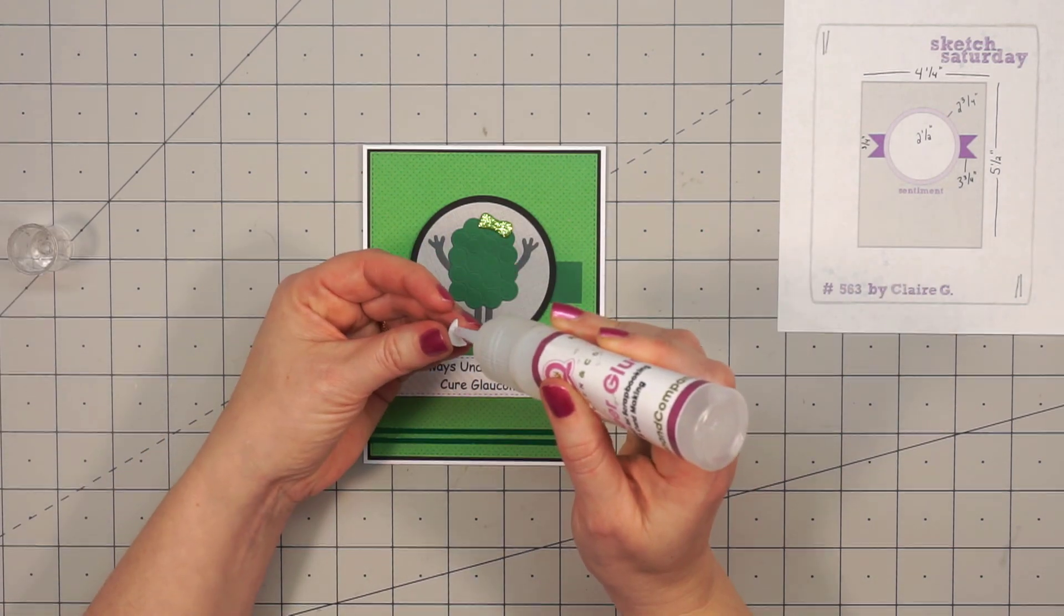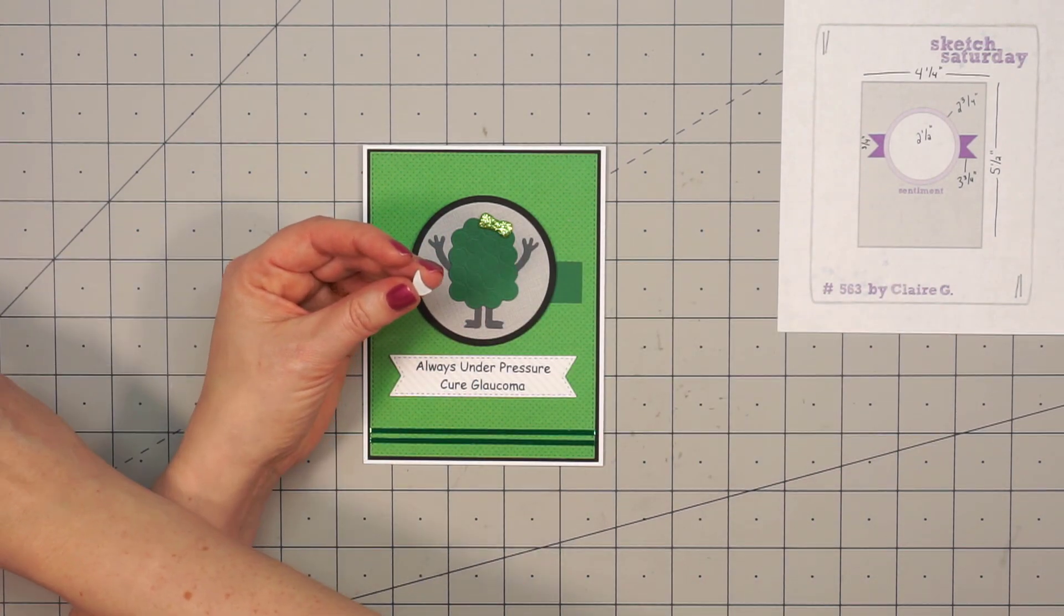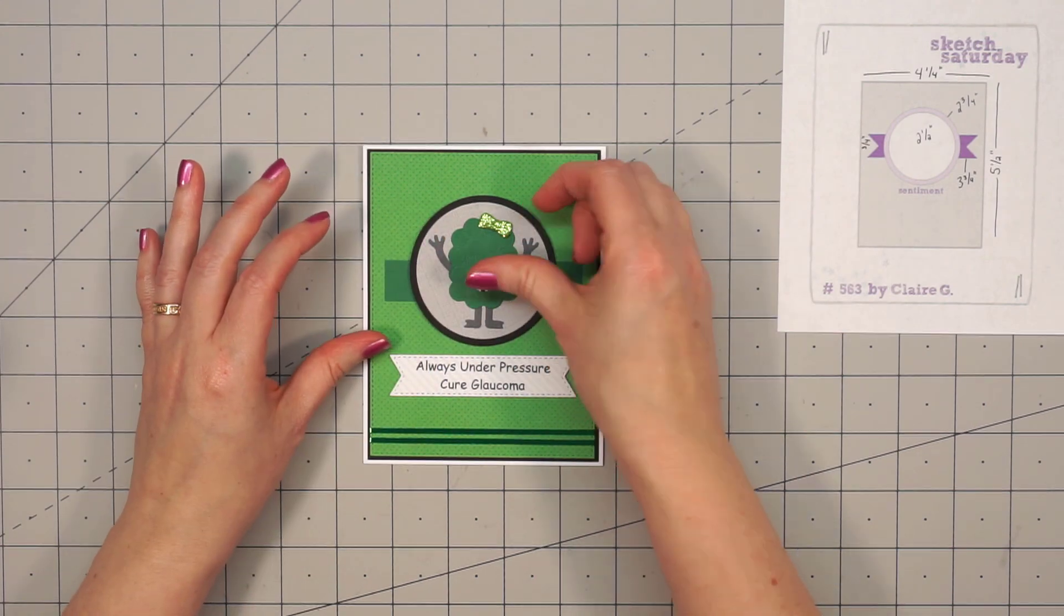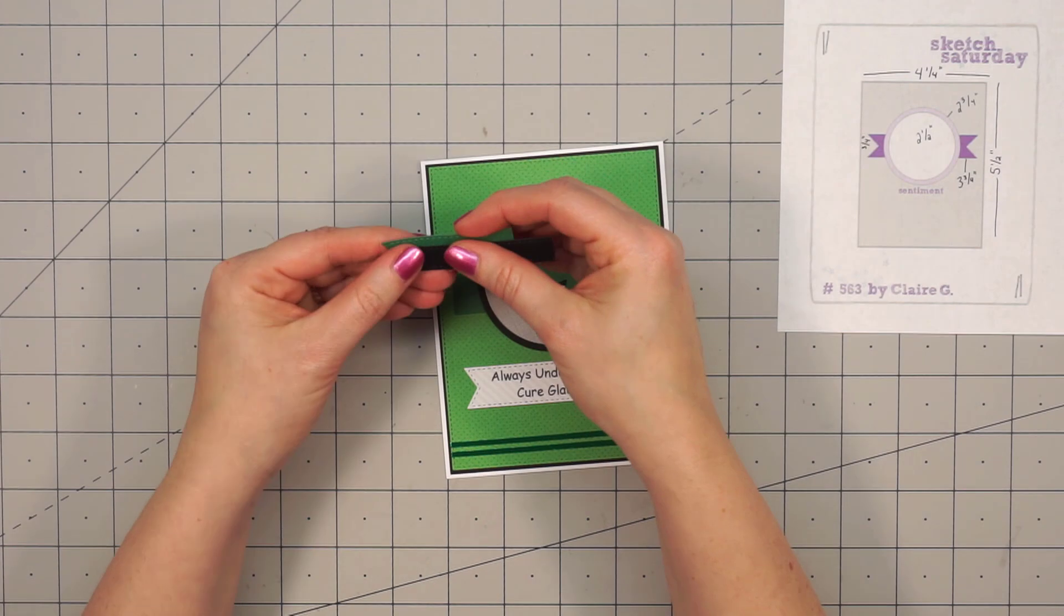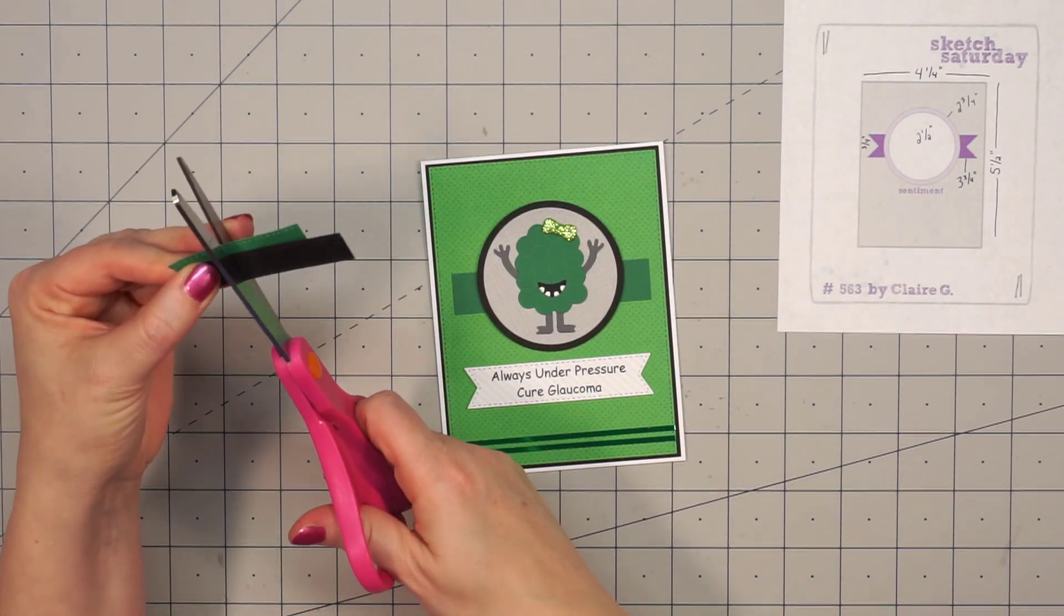It's very faint to see. It's white and has really light grey diagonal stripes on it. So I just use a stitched sentiment banner die to cut out that sentiment, and now I'm going to add my signature banners in that upper left-hand corner.